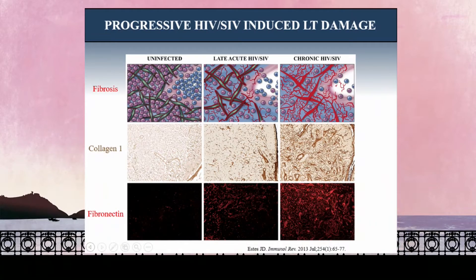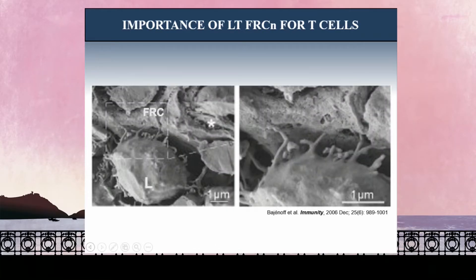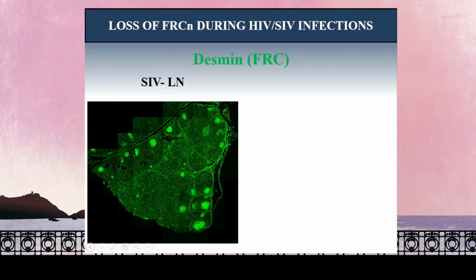I'm going to spend the last couple minutes talking about lymphoid tissue fibrosis and the implications for strategies of targeting reservoirs in lymphoid tissues. We've known for quite some time, with work I've done with Tim Schacker, that there is a progressive fibrotic process taking place within lymphoid tissue — showing collagen deposition and fibronectin accumulation in the lymph node over time. There are intricate fibroblast reticular networks within the lymph node critical for T cell survival and mounting immune responses. Ron Germain's group showed that these fibroblast reticular cells are absolutely needed for lymphocyte trafficking and bind and retain homeostatic cytokines for their maintenance.